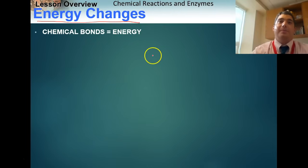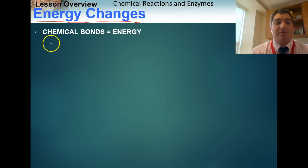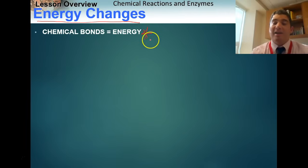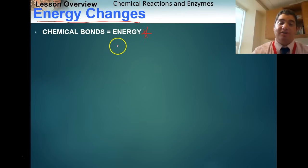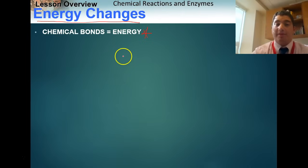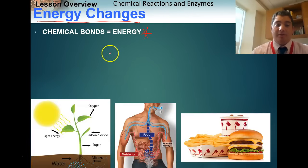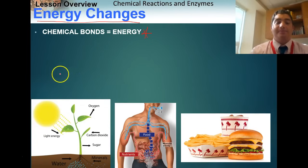Chemical reactions are very important in biology because they're all about energy changes, and life needs energy to survive. Chemical bonds — the bonds between atoms that create a compound — represent stored energy. It takes energy to make bonds, and when we break bonds we release energy.